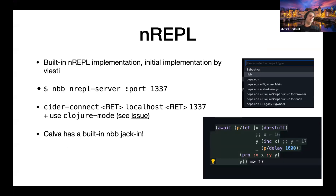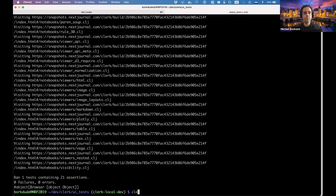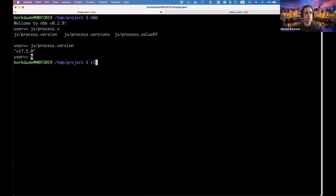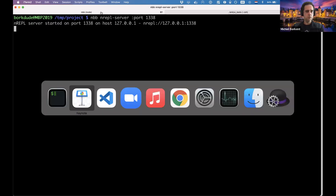There is a built-in nREPL server in NBB. If you type `npx nbb`, nbb installs itself and the nREPL is included — nothing else to install. You can start it manually with `nbb nrepl-server --port 1337`. Let me do that live: `nbb nrepl-server --port 1338`, and then connect from Emacs.